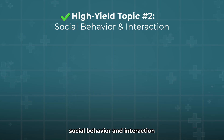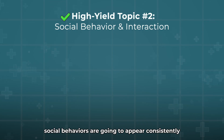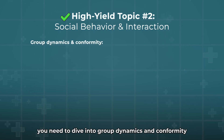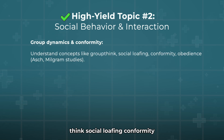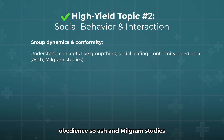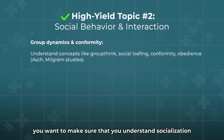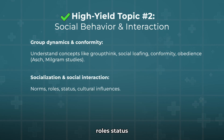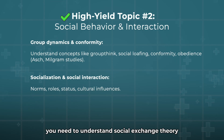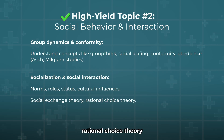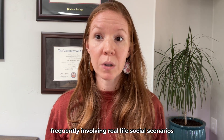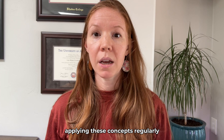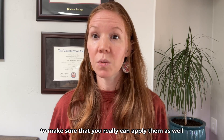High-yield topic number two: social behavior and interaction. Social behaviors appear consistently on the exam. You need to dive into group dynamics and conformity — concepts like groupthink, social loafing, conformity, and obedience, including the Asch and Milgram studies. You want to understand socialization and social interaction: norms, roles, status, and cultural influences. You also need to understand social exchange theory and rational choice theory. Practice questions involving real-life social scenarios and experimental setups regularly.